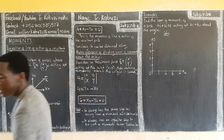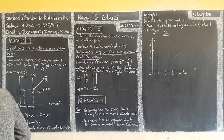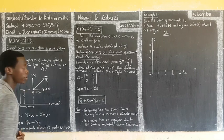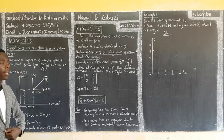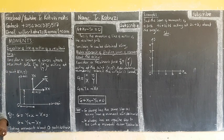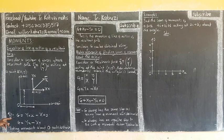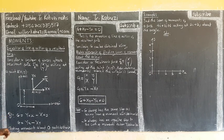If we consider taking moments about the origin — taking moments about the origin — it means that the sum of moments, and we are taking them anticlockwise.